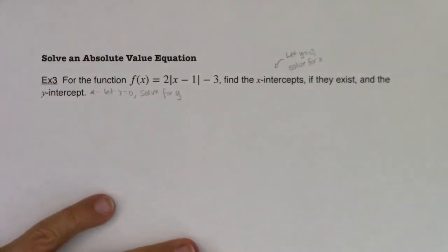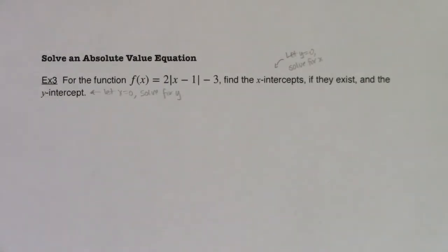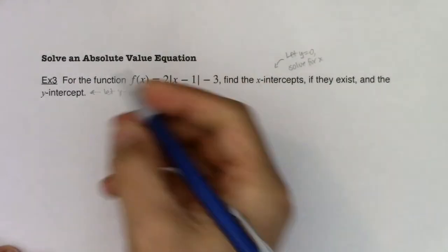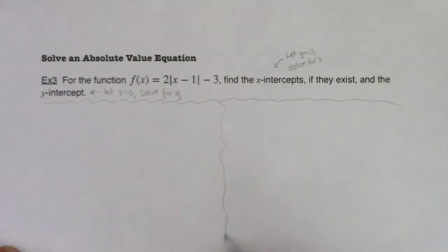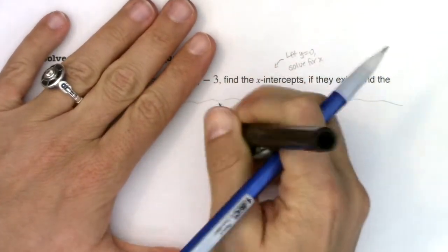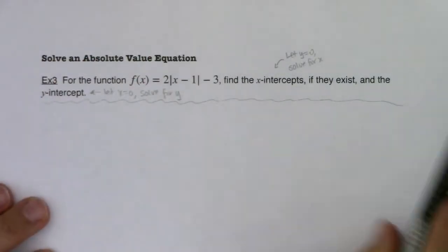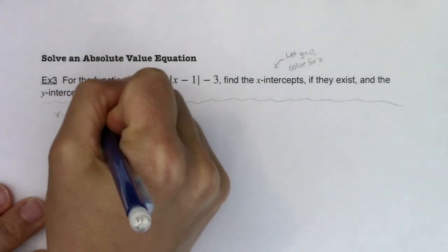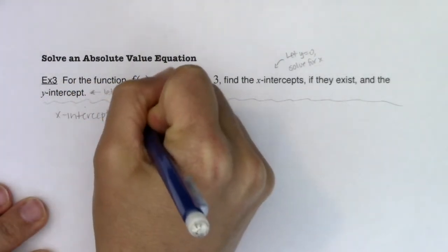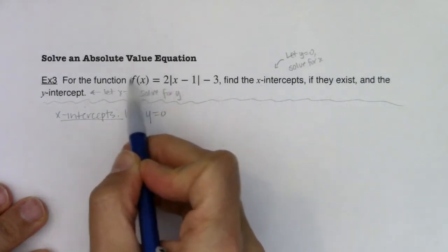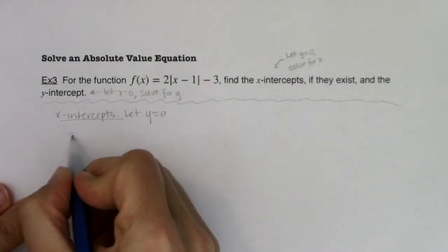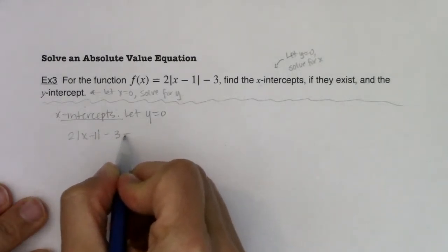We're going to do this by hand, and then I want to flip over to my calculator and show you a couple of tricks to help you expedite your work or just check your answer. So let's try this. The first thing I want to do is find the x-intercepts. I'll start with x-intercepts and we'll see how much room I have. So for my x-intercepts, I'm going to let y equal 0 — or in this case, f(x) equal 0. So I have 2|x − 1| − 3 = 0.